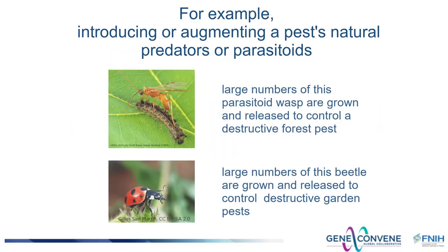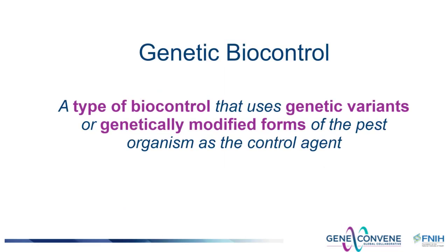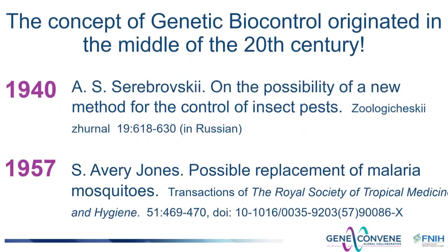This might, for example, involve introducing or augmenting a pest's natural enemies. Genetic biocontrol is a form of biological control in which genetic variants or genetically modified forms of the pest organism are used as a controlling agent. The idea of using genetics to directly combat pest populations originated in the middle of the 20th century in the context of insect control. It was recognized that genetics might be used to eliminate target populations or even to modify them so they were no longer a problem or threat.